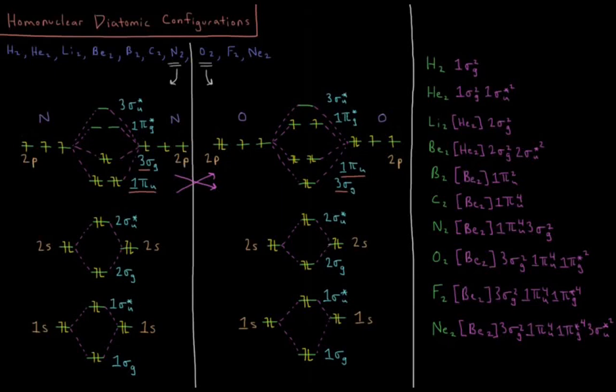This video will discuss the molecular orbital electron configurations of homonuclear diatomic molecules from the first two rows of the periodic table.